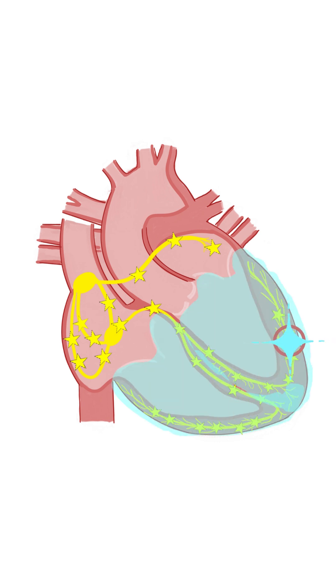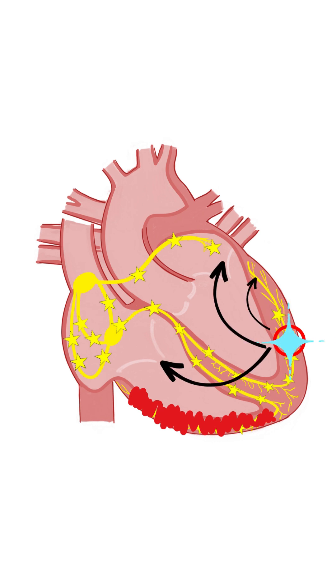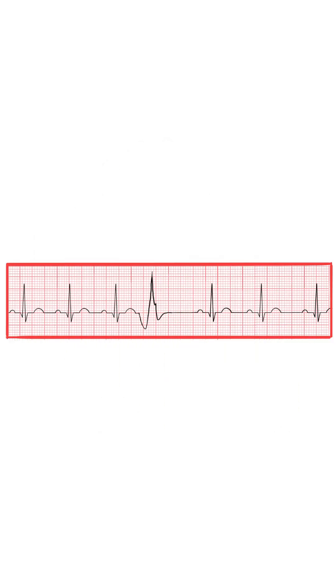Also, this impulse may be generated while some parts of the ventricles are in the refractory state. So, some part of the ventricles may be acceptable for a new impulse while the other parts are not. That's why we expect to see a bizarre wide and high QRS complex.